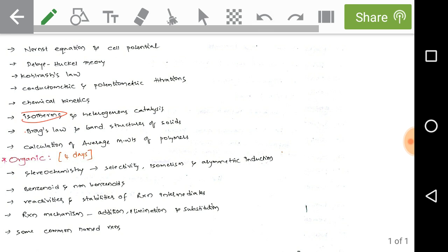Next, isotherms and heterogeneous catalysis. That means here we have three types of isotherms, just check them. Bragg's law and band structures of solids and calculation of average molecular weights of polymers. These are selected topics from physical chemistry.